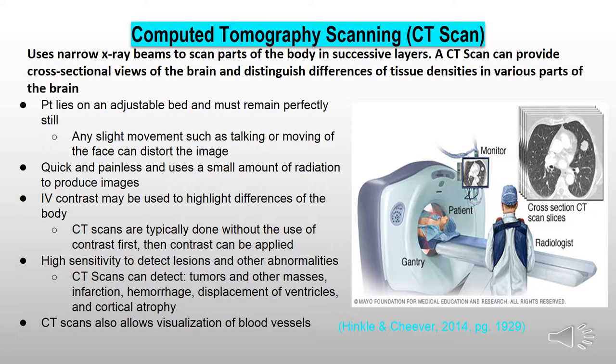CT scans use narrow x-ray beams to scan parts of the body in successive layers. A CT scan can provide cross-sectional views of the brain and distinguish differences of tissue densities in various parts of the brain. During a CT scan, the patient lies on an adjustable bed and must remain perfectly still. Any slight movement such as talking or moving of the face can distort the image. CT scans are quick and painless and they use a small amount of radiation to produce images.